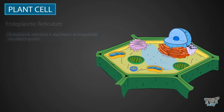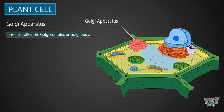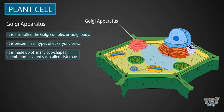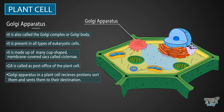Next part of the plant cell is the Golgi apparatus, or the GA, also sometimes called the Golgi complex or Golgi body. It is present in all types of eukaryotic cells. GA is made up of many cup-shaped membrane-covered sacs called cisternae. GA is called the post office of the plant cell — just as a post office receives letters, sorts them, and sends them to their destination, the Golgi apparatus receives protein, sorts them, and sends them to their destination inside or outside of the cell.